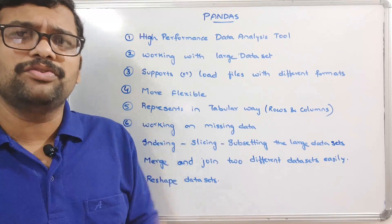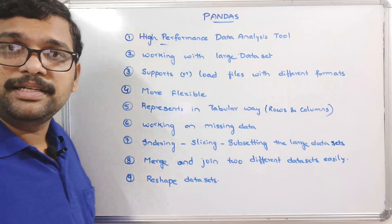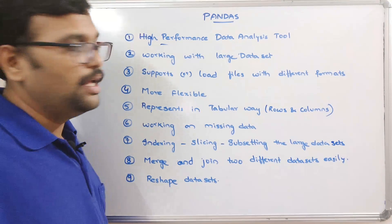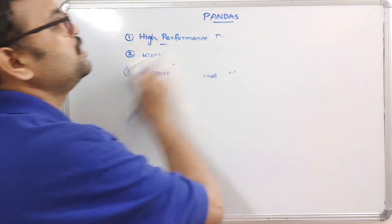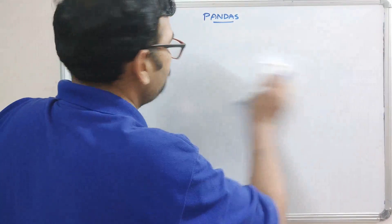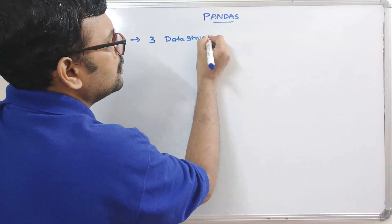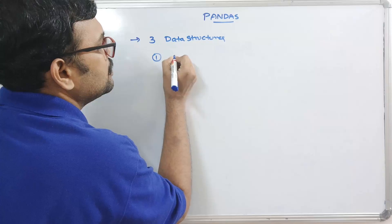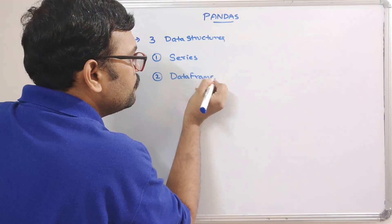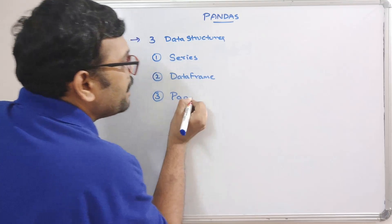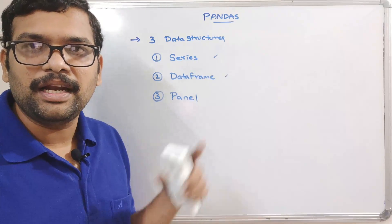Pandas is a high-performance and efficient data analysis tool, and this is achieved with the help of three data structures: the first one is Series, the second one is DataFrame, and the third one is Panel. We'll start with the first two and cover Panel later.